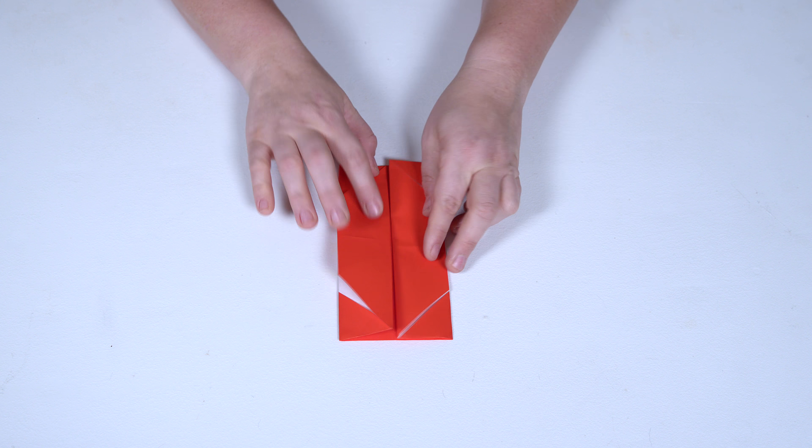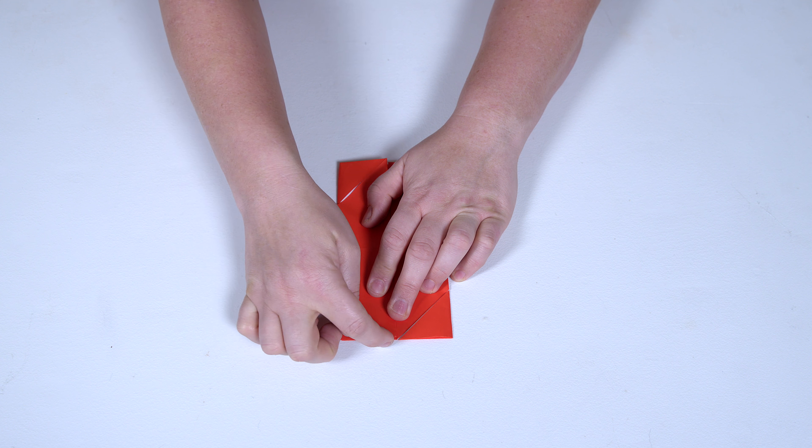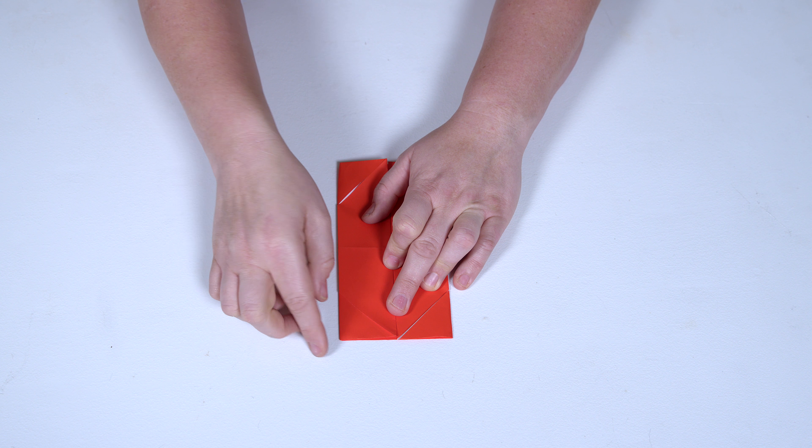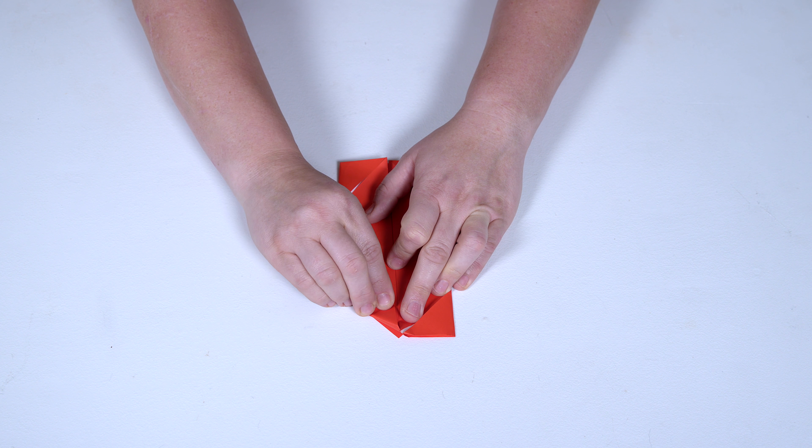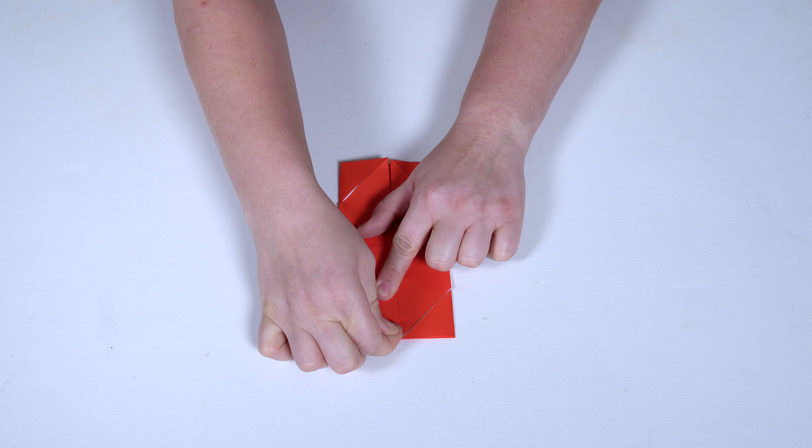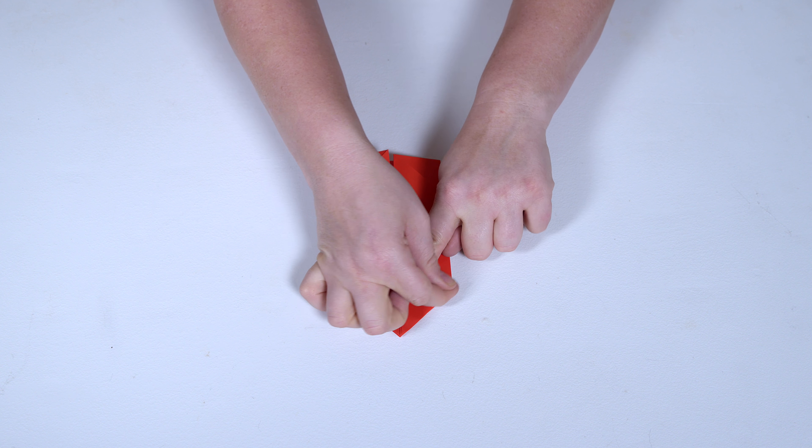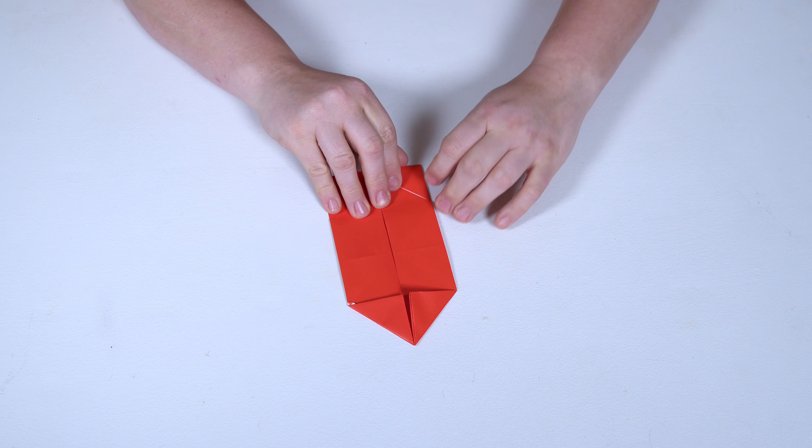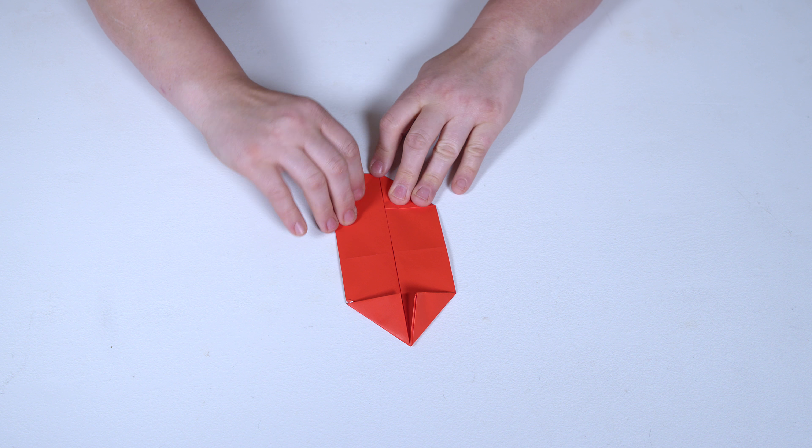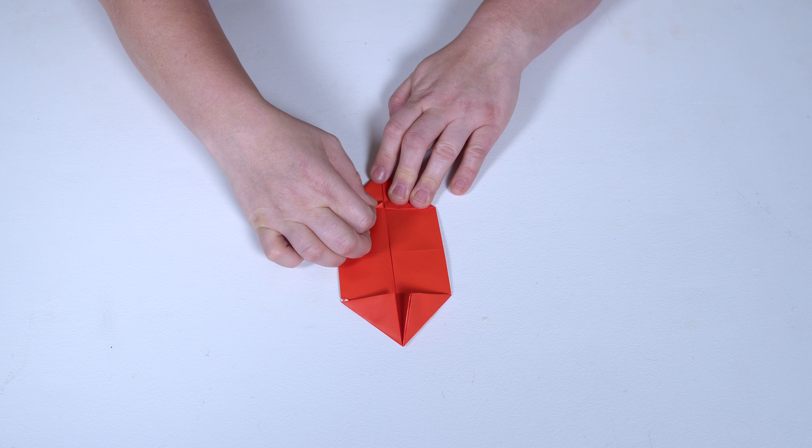Now we're going to fold the corner of this edge right here to the center. You can use this little piece of paper to help you as a guide, so edge to the center, crease it really good. Edge to the center, a really good crease there. Edge to the center. As you can see on each end we are repeating a lot of the same steps. Edge to the center.